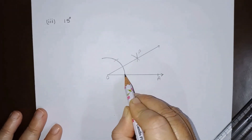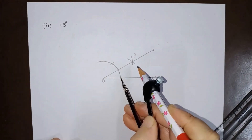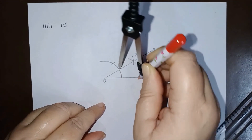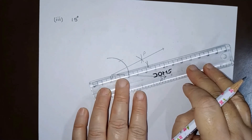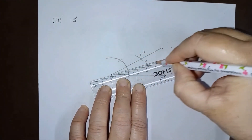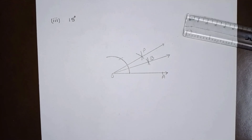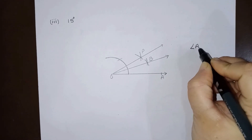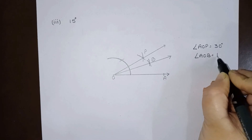Bisecting angle AOP means we have to draw two arcs — one from this point and one from this point. Let us draw this arc, and from this point we will draw another arc, and these two points are joined. This point and O are joined together, and taking this point as B, angle AOB is 15 degrees. We can write angle AOP is 30 degrees and angle AOB is 15 degrees.